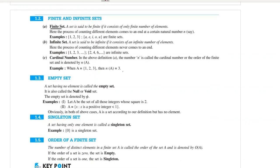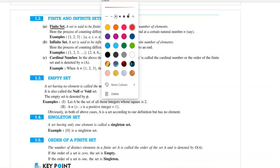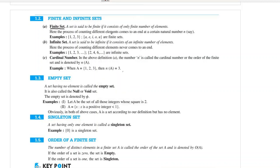A set is finite if it consists of only a finite number of elements — countable elements. For example, the set {1, 2} or the set of all vowels of English alphabets {a, e, i, o, u} — these are countable, so they are finite sets.